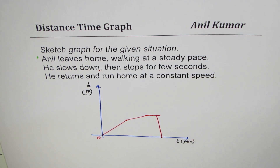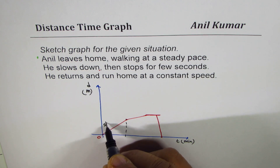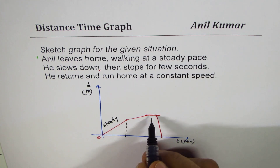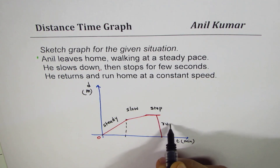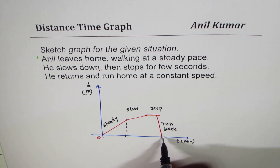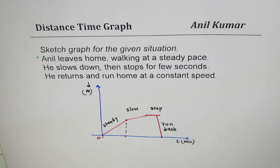So that could be the graph. The first leg shows steady pace, the second shows slowing down, the third shows stopping, and the final steep descent shows running back home. The distance decreases as Anil runs back home. That is the kind of journey which can be described with the help of a distance-time graph. Go through this video and also follow the links shown to understand this topic better. Thank you for watching — feel free to subscribe and post comments.